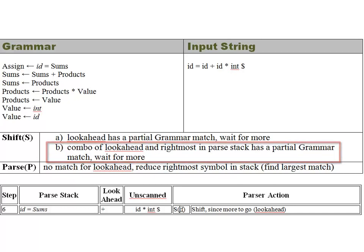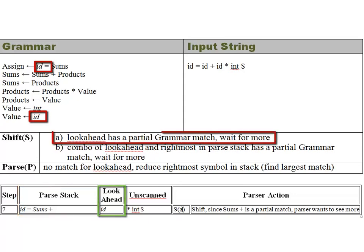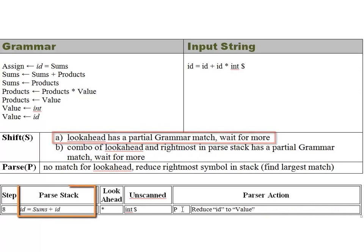Moving to step seven, we've added the addition sign to the parse stack. Looking only at our look-ahead, it's an ID, which satisfies shift condition A — the look-ahead has a partial match. Notice the parse stack is really starting to grow in values here.